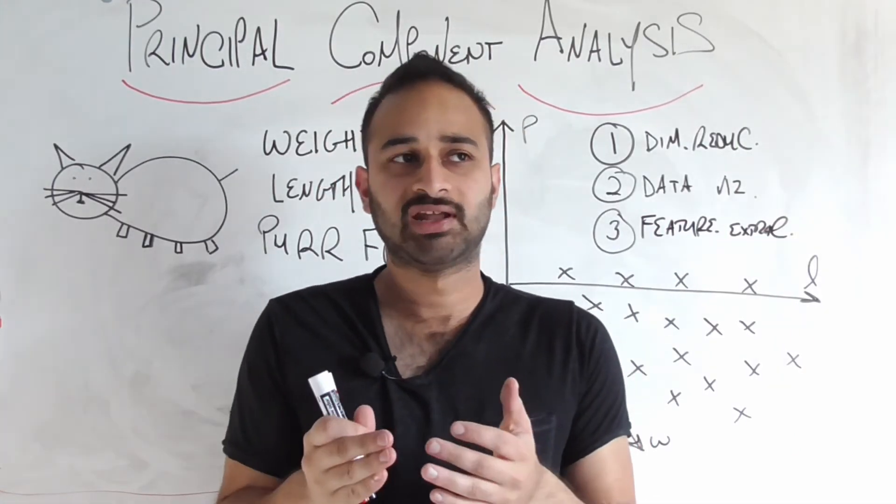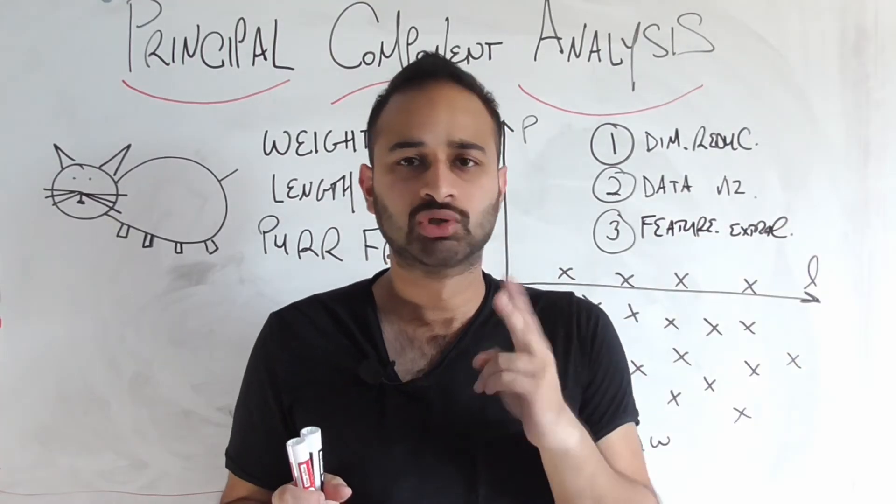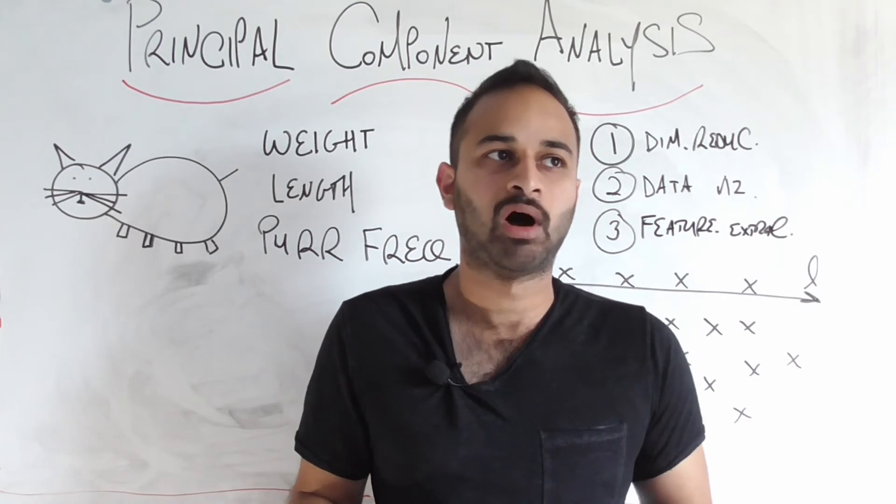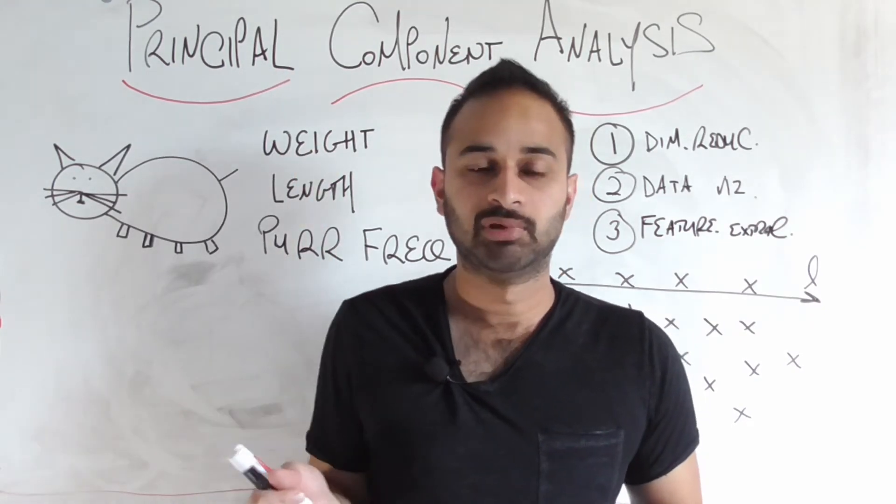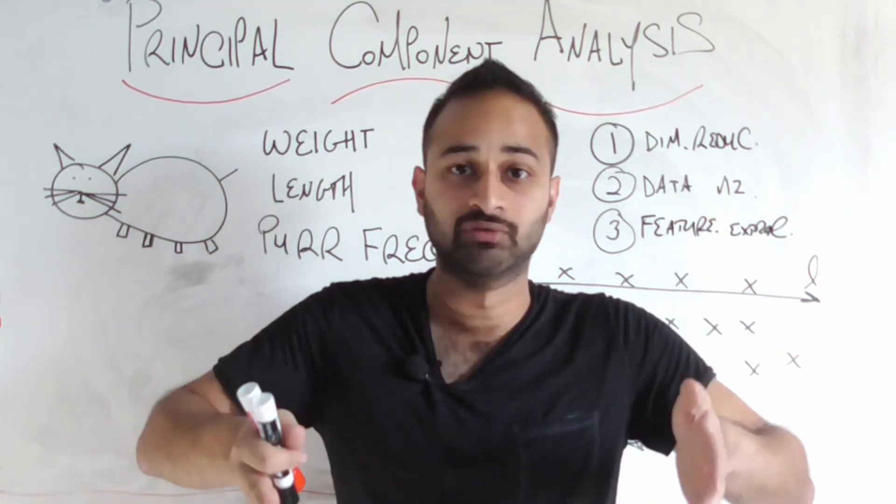So it's possible that body mass index, weight and length are not all necessary. Maybe we just need any two of them and we can derive the third one. In which case we don't need to bother storing that third variable because it's just extraneous. It's just telling us stuff we can already derive from the other two variables.